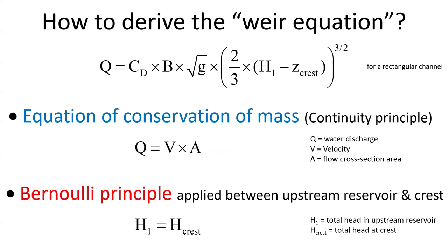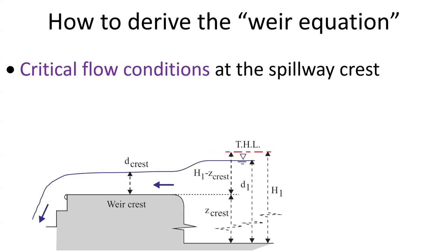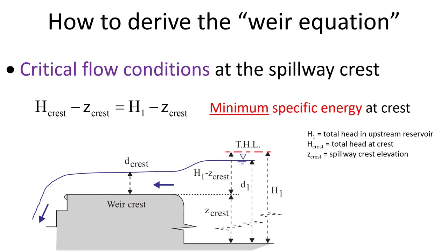The Bernoulli principle is applied between the upstream reservoir and the crest, with the total energy being the same upstream and at the crest. We assume critical flow conditions at the spillway crest. That is, at the crest, the minimum specific energy occurs.